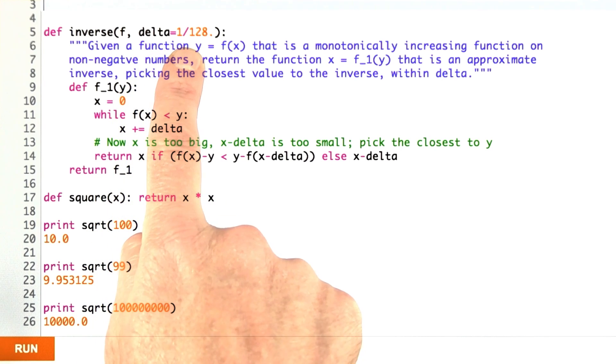Which here I've defined as 1/128th, but you can define it as what you want when you're asking for the inverse. Keep on going until we find an f of x which is not less than y. Now x is too big, it's greater than or equal to y, and x minus delta is too small, it's less than y.